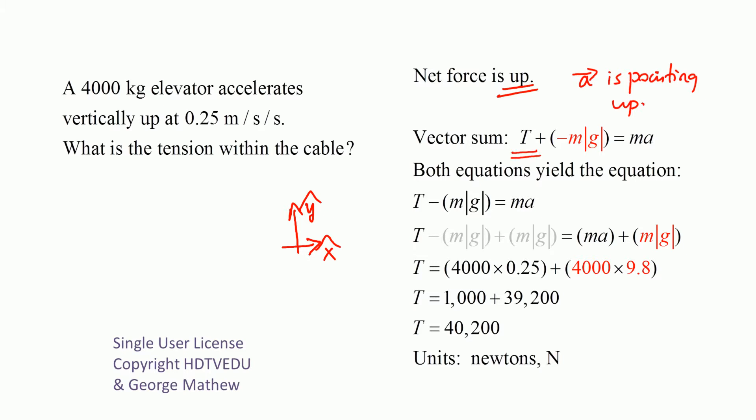Tension always acts vertically up, so it is positive. Gravitational force acts vertically down, so it is negative. That's why we have a negative in front of mg. Ma is positive because it is accelerating up. We get the same equation: T minus mg equals ma. Add mg to both sides, and T equals ma plus mg.